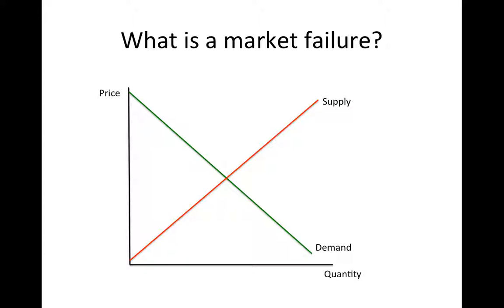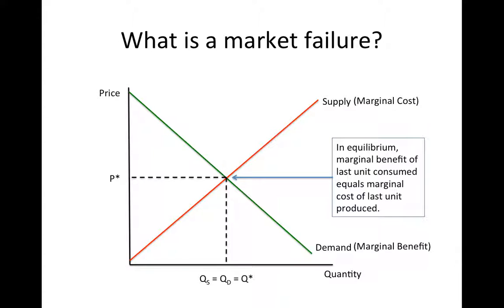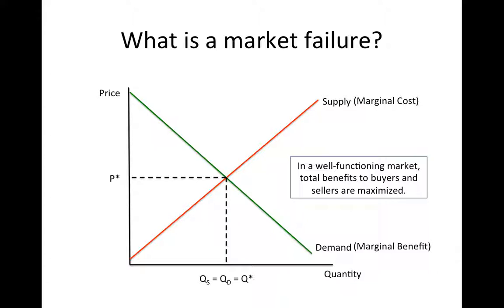Recall from our last lesson that in a well-functioning competitive market, the equilibrium outcome occurs where the quantity supplied equals quantity demanded. At this outcome, the marginal benefit to consumers of the last unit consumed equals the marginal cost to sellers of the last unit produced. In addition, in a well-functioning market, total benefits to buyers and sellers are maximized.